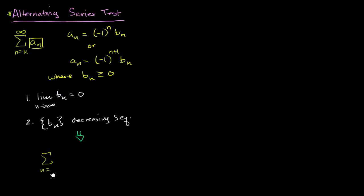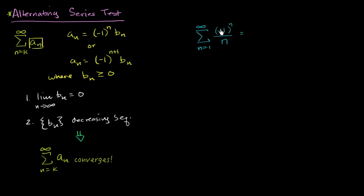This might seem a little abstract right now. Let's use this with an actual series to make it more concrete. Let's say I had the series from n equals one to infinity of negative one to the n plus one over n. We could write it out: when n equals one, this is negative one squared over one, which is one. When n is two, it's negative one to the third power, which is negative one half, so it's minus one half plus one third minus one fourth, and it just keeps going on forever.